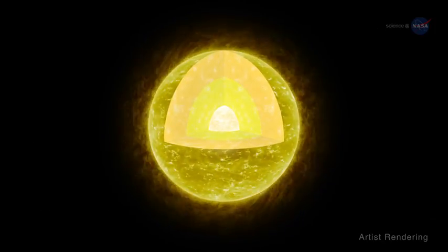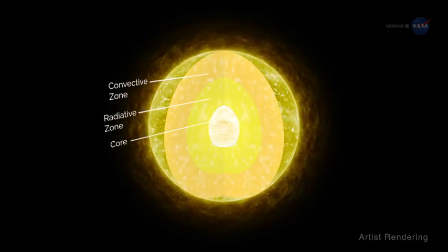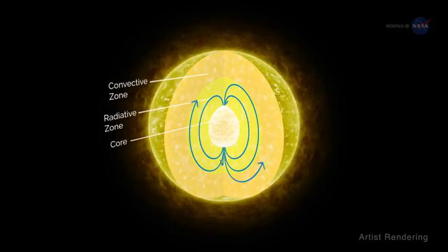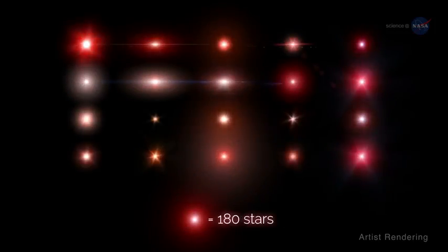Astro-seismologists analyze brightness fluctuations to study the interior structure of stars, including the strength and distribution of magnetic fields deep below the stellar surface. This is exactly what Stello and colleagues did using Kepler observations of 3,600 red giant stars.